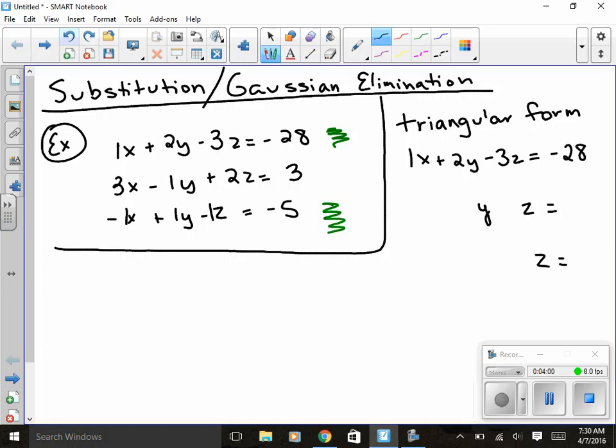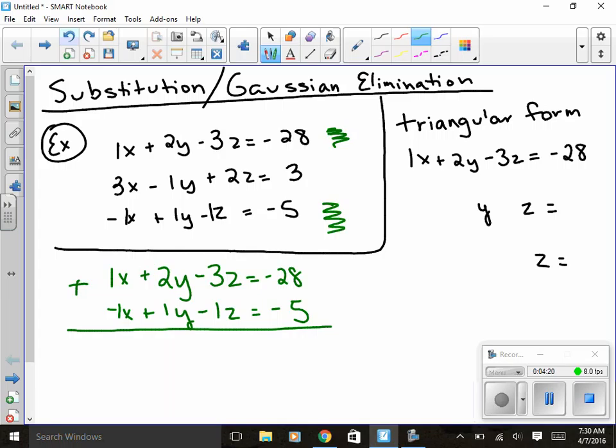If I look at equation 1 and equation 3, notice that the x is 1x and -1x, so if I were to combine those, aka add them, I would get rid of that x and then I'd be down with a y and a z. So I've got 1x + 2y - 3z = -28, and then I've got -1x + 1y - 1z = -5. We're adding these. Now here's what a lot of people struggle with: they struggle with the signs that are in front of the variable.